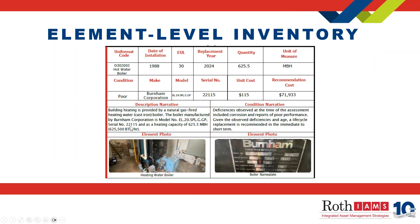Here is an example of an element-level inventory. We go down to Uniformat level four. Starting from HVAC D30, then D3020 boilers, we're now at D30202, which is a hot water boiler. We have date of installation, EUL, and replacement year. You get a quantity — in this case 625.5 MBH — and a condition rating. This is where we gather the make and serial number. You get a unit cost and recommendation cost based on quantity: 625.5 MBH at $115 per MBH comes out to $71,933. You get a description narrative, a condition narrative, and photos including, where we gather make, model, and serial number, a photo of the nameplate if available — giving you both an overview of the boiler and the nameplate.